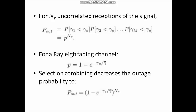Consider a Rayleigh fading channel. For a Rayleigh fading channel, we can write P = 1 − e^(−gamma0 / gamma_bar), where gamma_bar is the average received SNR. Substituting into the outage probability equation, the outage probability in selection combining is: P_out = (1 − e^(−gamma0 / gamma_bar))^NR. Since this quantity lies between 0 and 1, selection combining decreases the outage probability.